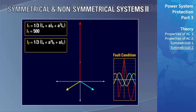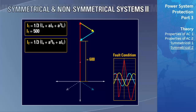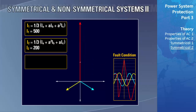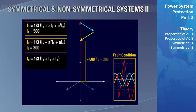For negative sequence, the A-squared operator on phase B rotates it 240 degrees, and the A operator on phase C rotates it 120 degrees. Phases B and C combined equate to negative one-third of phase A. Given phase A is 900 amps, subtracting one-third results in 600 amps total; divided by 3 gives a negative sequence of 200 amps. For zero sequence, all three phases are added without A operators. Phase A is 900 amps, and B and C again equate to negative one-third of phase A, giving 600 amps divided by 3, resulting in a zero sequence of 200 amps.